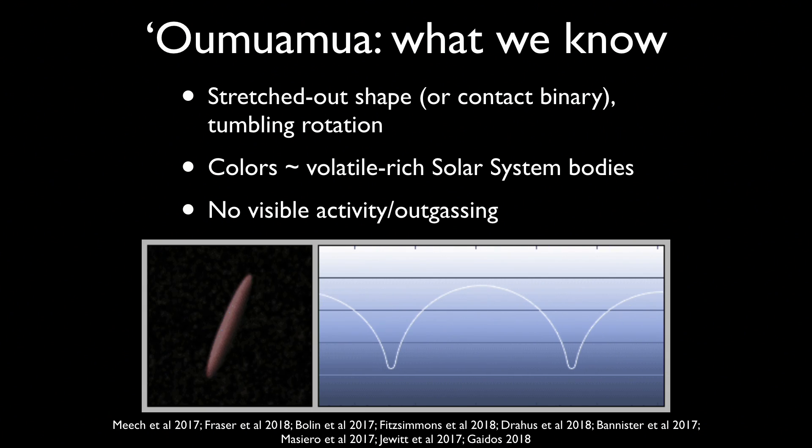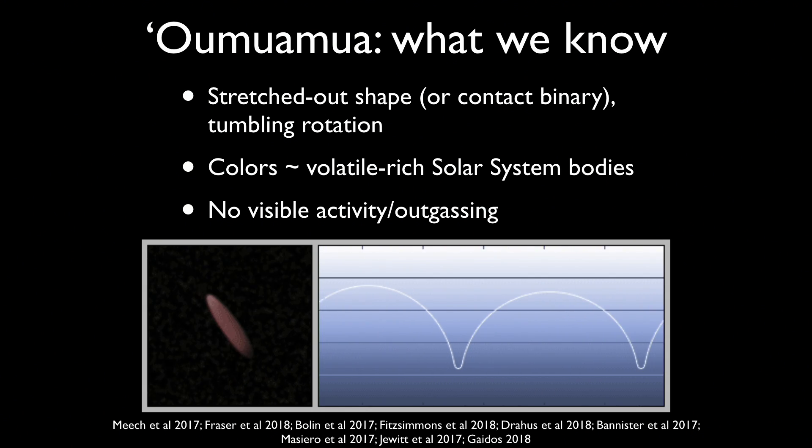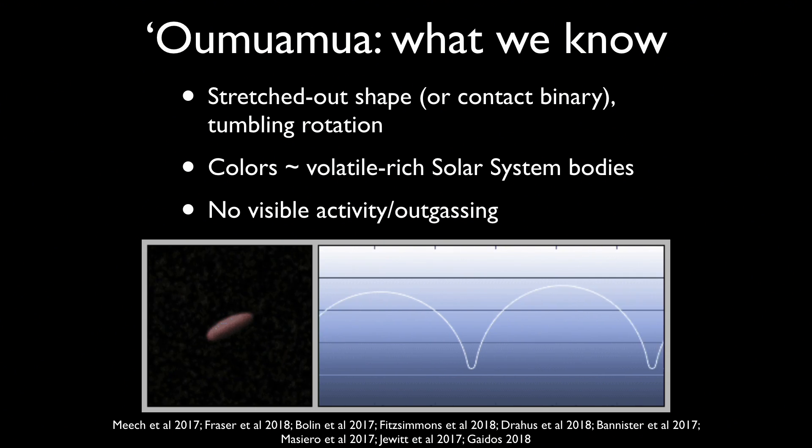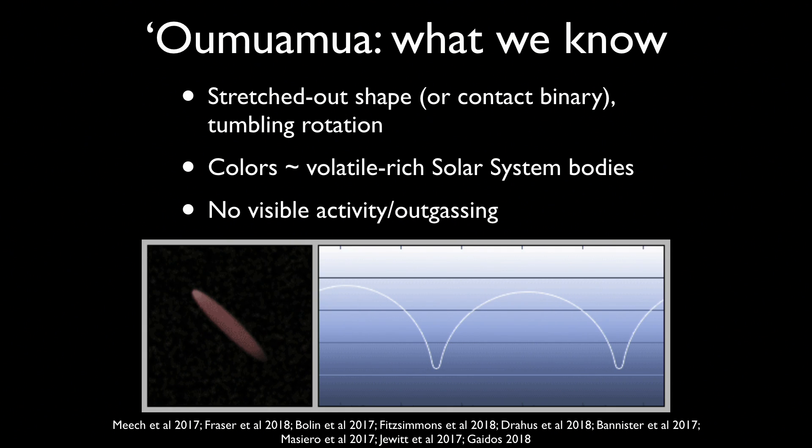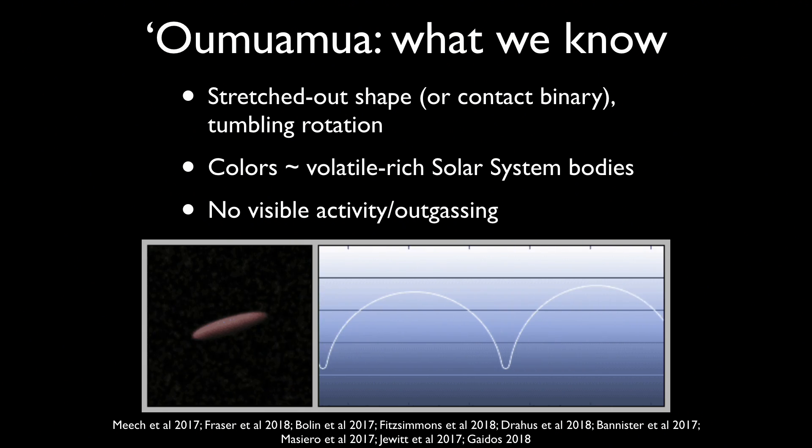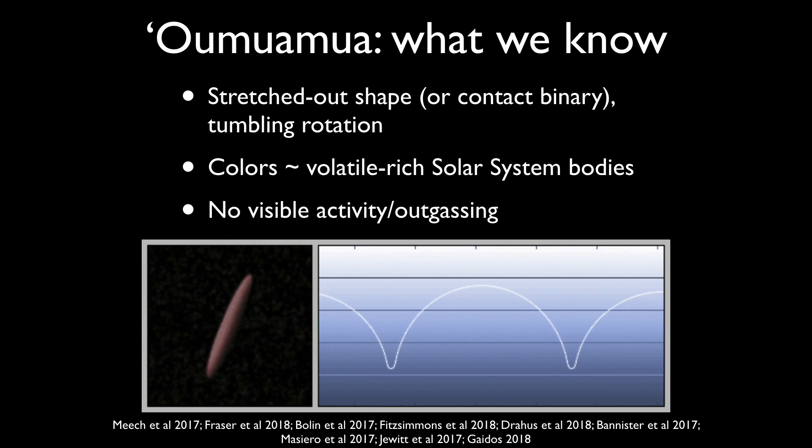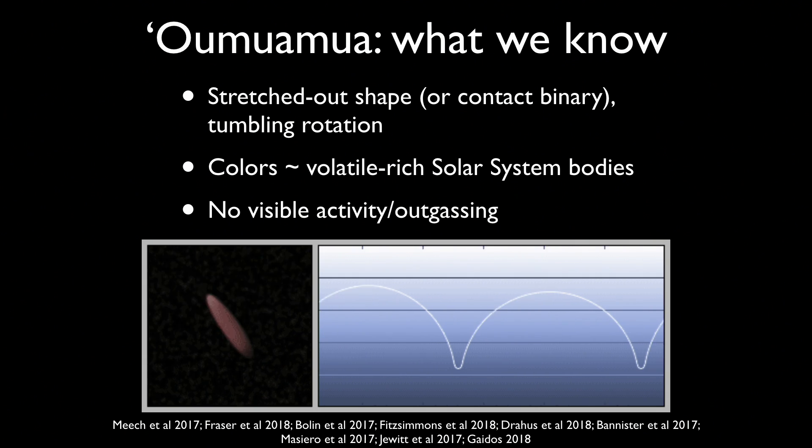Now here's what we know about Oumuamua. We can measure its brightness and see how its brightness changes in time. And we see that it goes up and down quite a bit, following a regular pattern, so much that we think it has a very stretched out cigar-like shape.